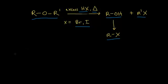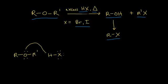Let's look at the mechanism for the acidic cleavage of ethers. We start with our ether, which we are going to react with our hydrogen halide. We start with an acid-base reaction. A strong acid like hydrobromic acid will donate protons. The ether is going to act as a base, and the lone pair of electrons are going to pick up the proton from our hydrogen halide. The electrons will kick off onto the halogen, and we will end up protonating our ether.